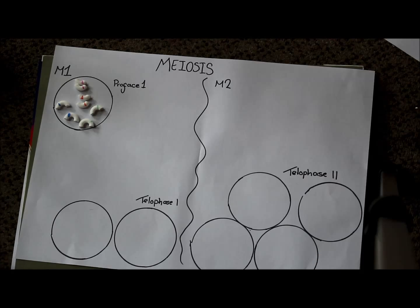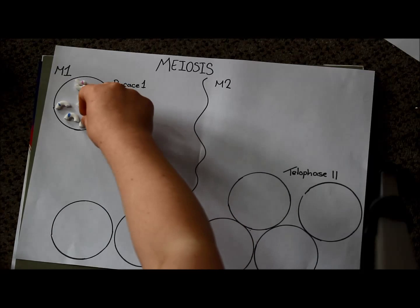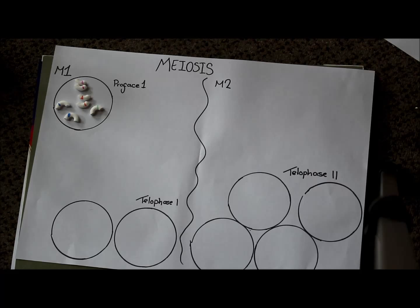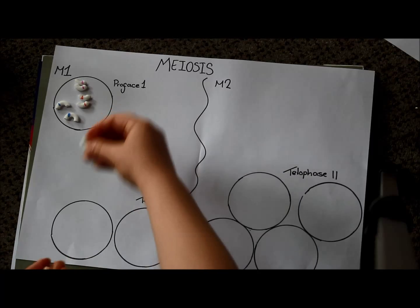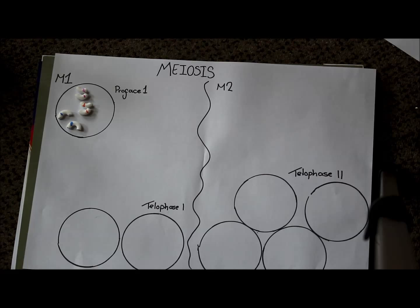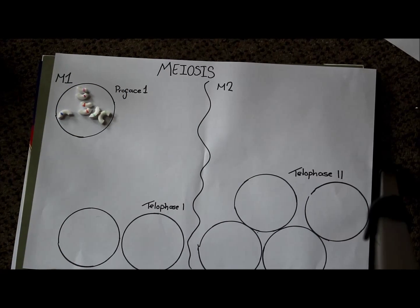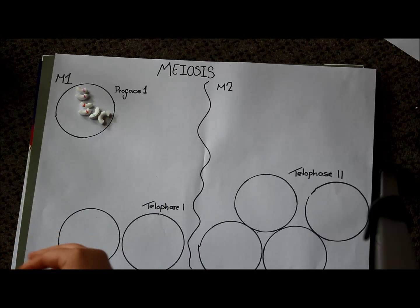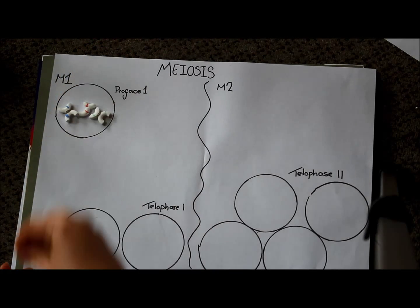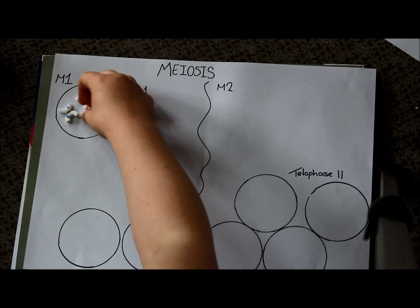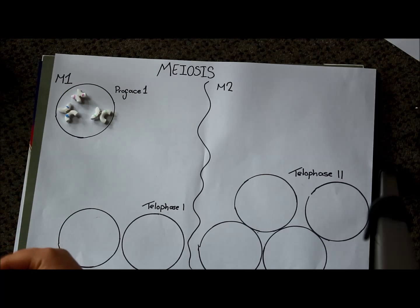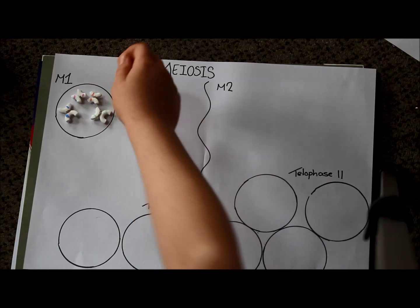During meiosis 1 we have a stage called prophase 1 in which you get the exact same thing happening as happened in prophase in your mitosis cell. Note to self, white tack does not stick to the mints. So, we've got the identical chromosomes being attached together with centromeres.